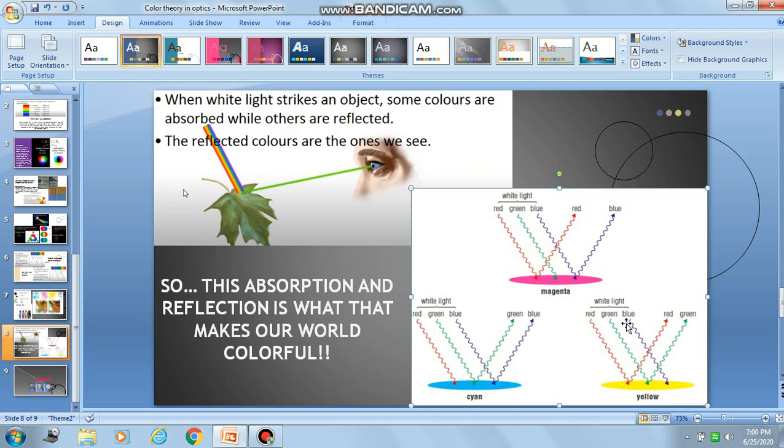So once again, when the blue colored wavelength is absorbed and the red and green are reflected, we are able to see yellow color. Yes, it's quite interesting that red and green make yellow.